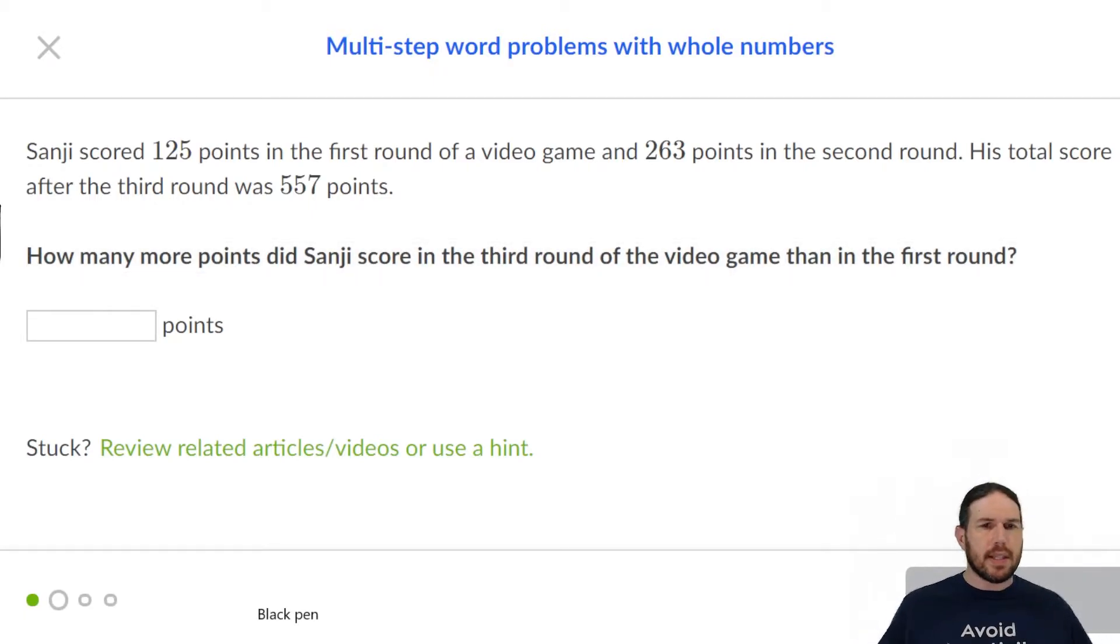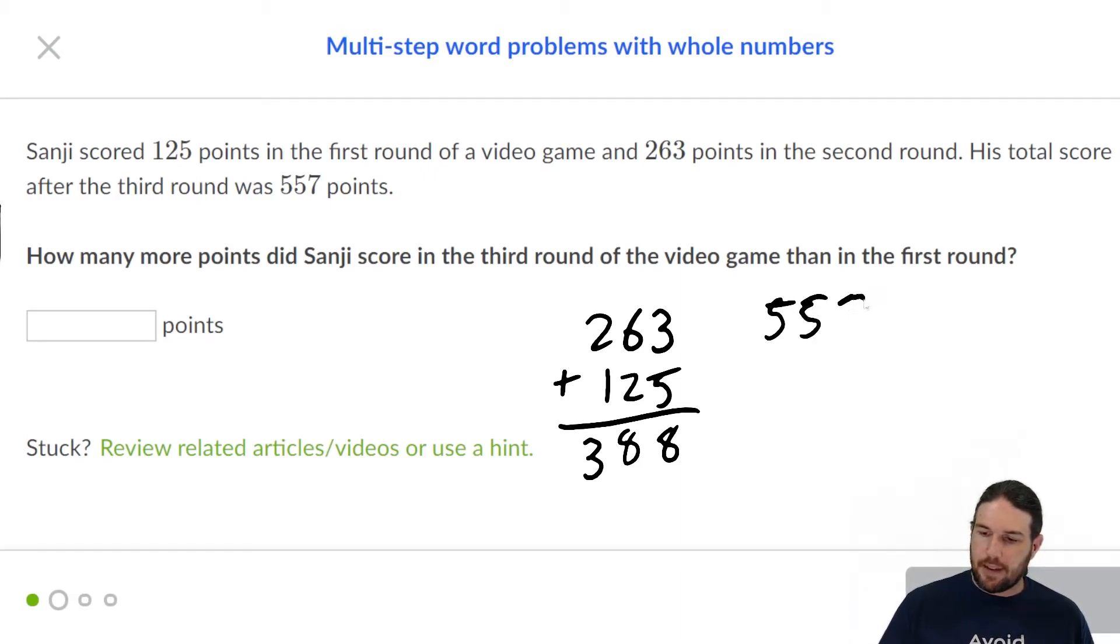How many points did he score up to that point? That's 263 plus 125. That's a fairly easy one. So he had 388 points when he got into round three. At the end, he had 557, so we're going to subtract 388.